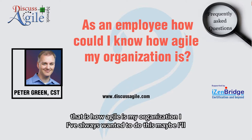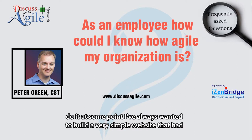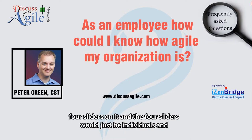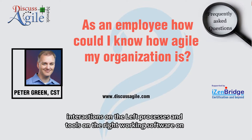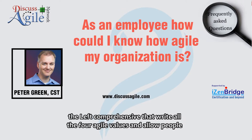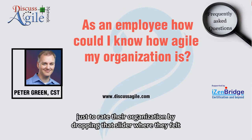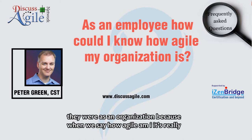I've always wanted to build a very simple website that had four sliders on it. The four sliders would be: individuals and interactions on the left, processes and tools on the right, working software on the left, comprehensive documentation on the right — all four Agile values — and allow people to rate their organization by dropping that slider where they felt they were.